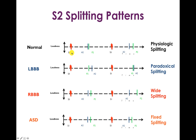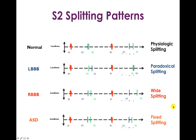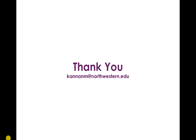So the S2 splitting patterns are: normal physiologic splitting where you can't hear splitting at expiration but can at inspiration; paradoxical splitting with left bundle branch block, where the left-side ejection time is delayed beyond the pulmonary ejection time; wide splitting with right bundle branch block, which is an exacerbation of normal physiology; and fixed splitting with ASD. One thing to keep track of on the wards — people often mix up 'wide splitting' and 'fixed splitting.' Right bundle branch block gives wide splitting, not fixed splitting. Use 'fixed splitting' only for ASD. Those were the S2 splitting patterns — I hope that was helpful, thank you.